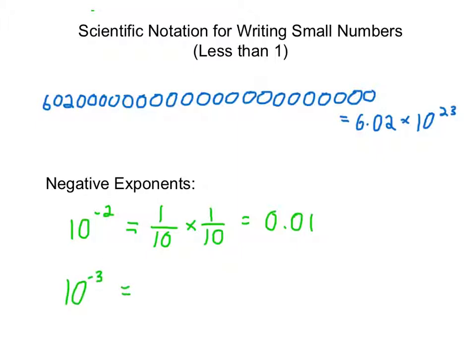10 to the negative 3 is 1 tenth times 1 tenth times 1 tenth, or .001, and so on. And so we'll use negative exponents when writing numbers less than 1.